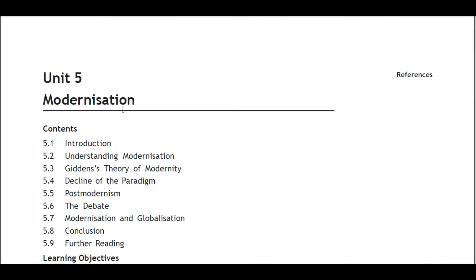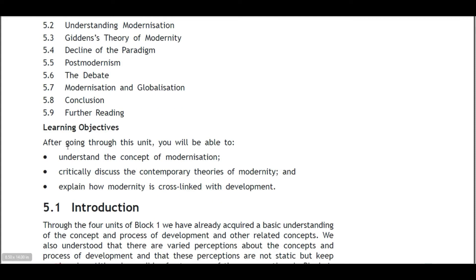Unit 5: Modernization. Contents: 5.1 Introduction, 5.2 Understanding Modernization, 5.3 Giddens' Theory of Modernity, 5.4 Decline of the Paradigm, 5.5 Post-modernism, 5.6 The Debate, 5.7 Modernization and Globalization, 5.8 Conclusion, 5.9 Further Reading.